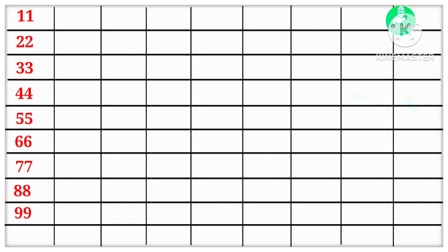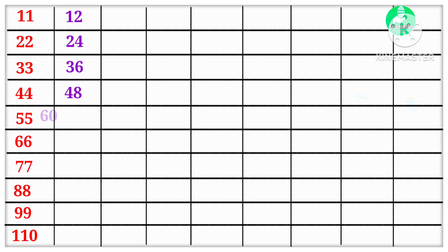11 10s are 110. 12 1s are 12, 12 2s are 24, 12 3s are 36, 12 4s are 48, 12 5s are 60, 12 6s are 72, 12 7s are 84, 12 8s are 96.